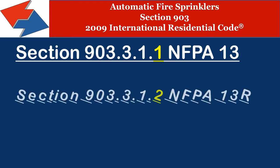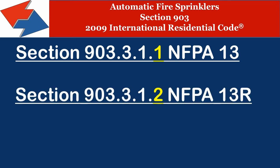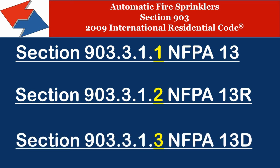The second is NFPA 13R, which is referenced in Section 903.3.1.2. And the third automatic fire sprinkler discussed is NFPA 13D, which is referenced in Section 903.3.1.3.